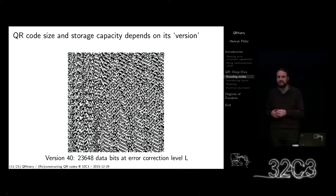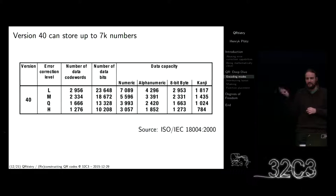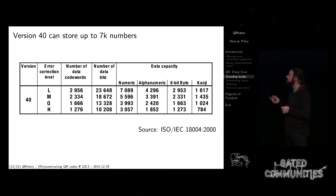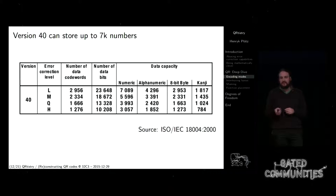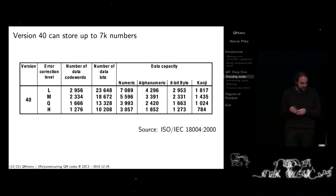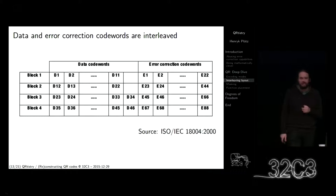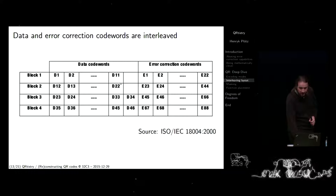Dieser hier speichert die Buchstaben Q und A und der Rest ist Padding — da hat man die ganzen Bits nicht gebraucht. Aus der Spezifikation gibt es Seiten und Seiten von Tabellen, die einem sagen, wie viel Speicherkapazität in jedem Code drin ist. Zum Beispiel hat Version 40 23.000 Bits — das sind ungefähr 7.000 Zahlen oder etwa 3.000 Zeichen. Wie ich schon früher sagte, sind Daten und Fehlerkorrektur miteinander vermischt. Das sind Codewords, also 8-Bit-Bytes, und die Daten-Codewords sind hier angegeben. Also Hello World wäre H, E, L, L und so weiter.